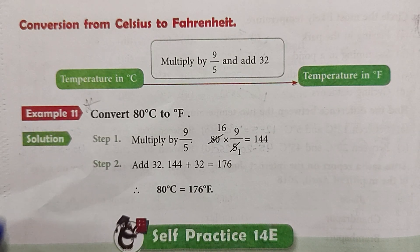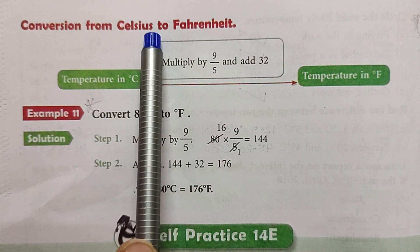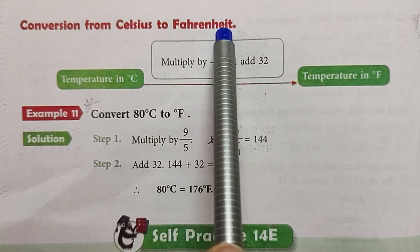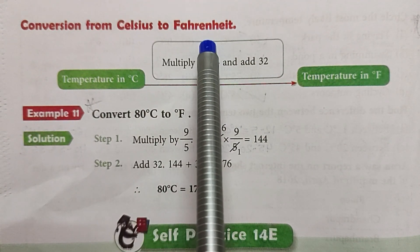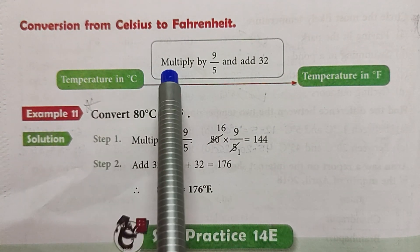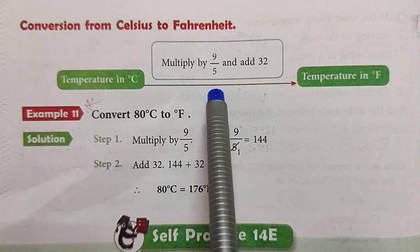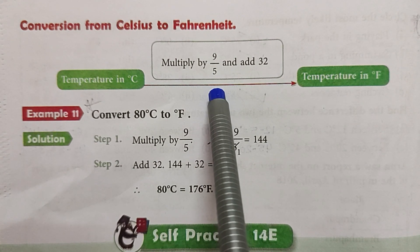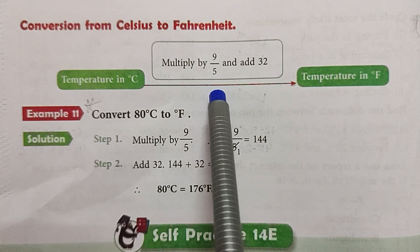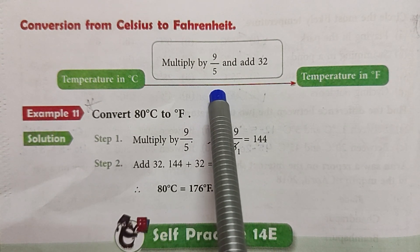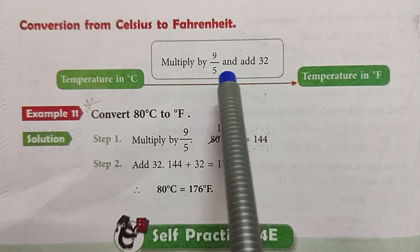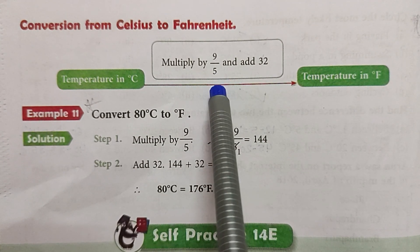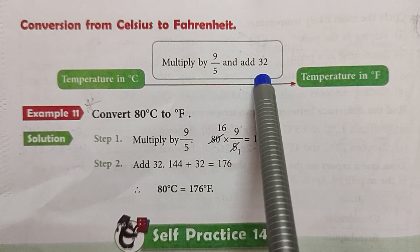Now, conversion from Celsius to Fahrenheit. Celsius को Fahrenheit में change करने के लिए, जो भी हमें Celsius में temperature दिया है उसको पहले 9/5 से multiply करेंगे और जो answer आएगा उसमें 32 को add करेंगे।